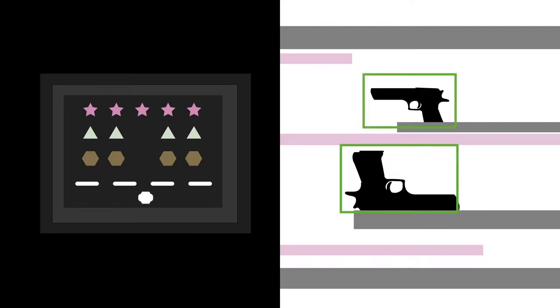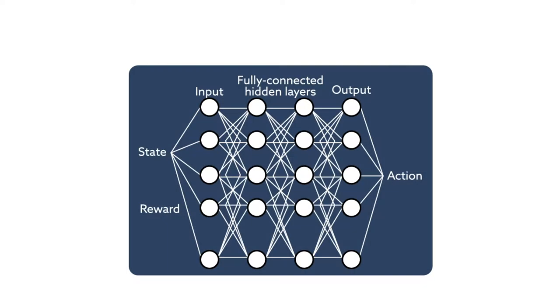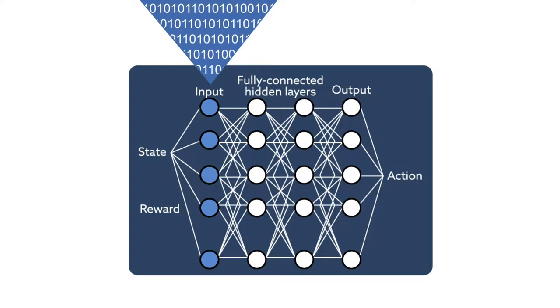But deep reinforcement learning algorithms have their limitations. For one, they generally lack the ability to take lessons learned in one task and apply them to another. Models also tend to be inefficient, requiring enormous amounts of data to enable machines to interact with their environment.